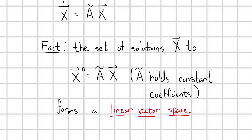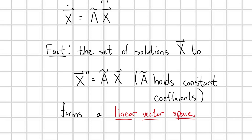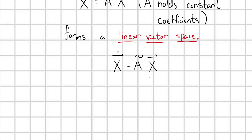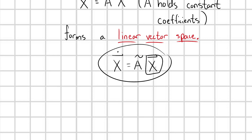If you wanted to verify this fact, you would go through the list of postulates for what a vector space must follow. You could propose two arbitrary solutions x1 and x2, and then observe some of those key postulates like closure and the existence of a zero vector, etc. You could verify that the set of solutions to this system of differential equations forms a vector space. So if my solutions form a linear vector space, I can define a basis for that vector space — I can define basis vectors and take a linear combination of those basis vectors to build up any vector x in my vector space.